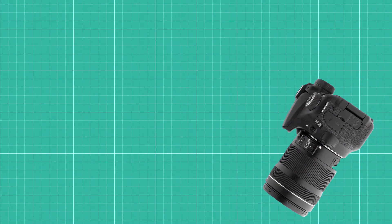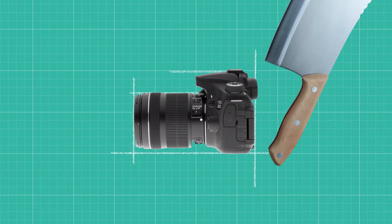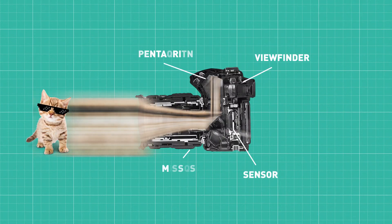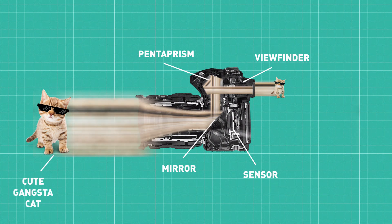Inside the body, the light is reflected on a mirror, then on a pentaprism to the viewfinder. The advantage of DSLRs is the quality that can be achieved through the ability to change lenses. The drawback is their size and weight, as they must be large enough to hold the entire mirror system. And because of the mirror, the lens is far from the sensor, so it has to be big too to project enough light.